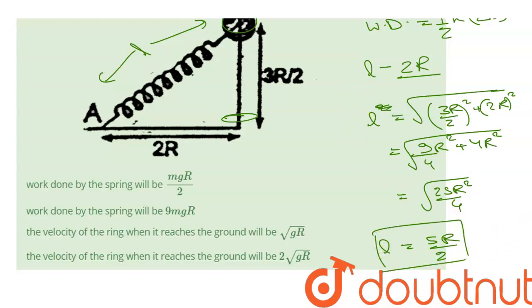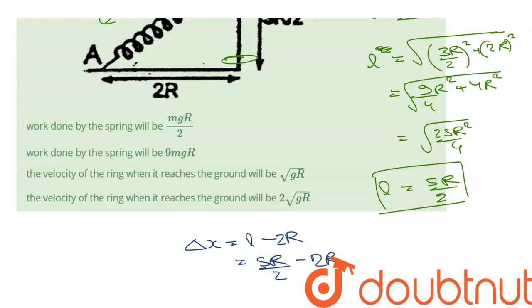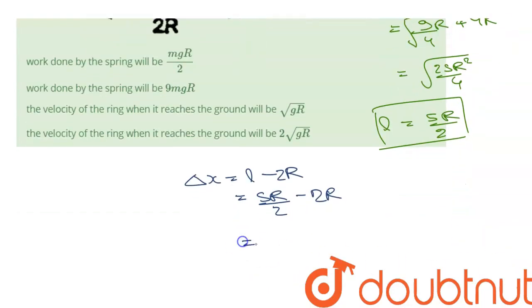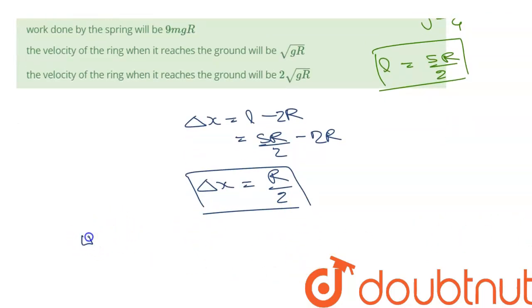So L is 5r/2, which means the amount by which the spring was stretched is L minus its natural length 2r: 5r/2 − 2r = r/2. So δx = r/2. The work done by the spring is ½ × k × δx².